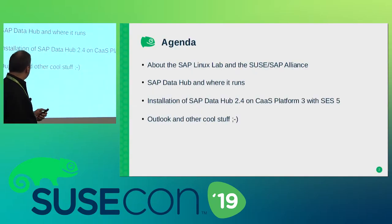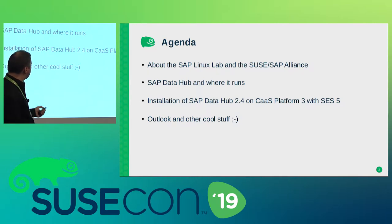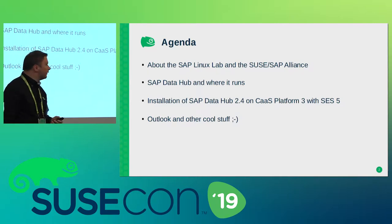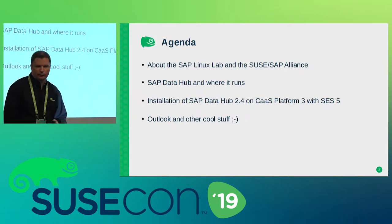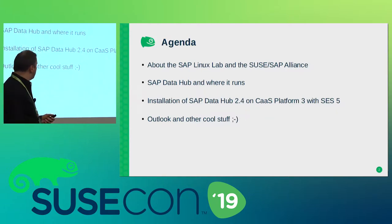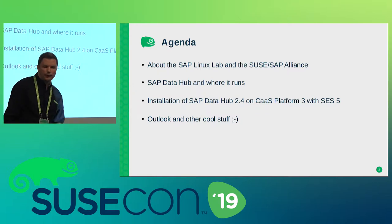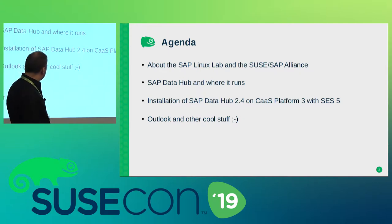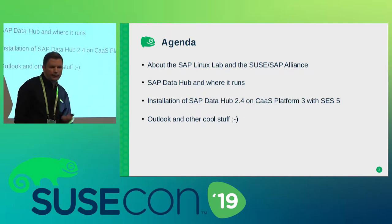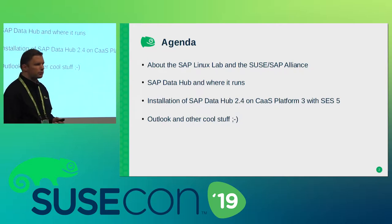Let me go quickly to the agenda. I will start with some slides about the SAP Linux Lab and the SUSE SAP Alliance, then go to the SAP Data Hub product and where it runs. Then I'll go through the installation with CAS3 and SES5 using Data Hub 2.4, and afterwards I have some outlook regarding Data Hub and some other cool container projects.